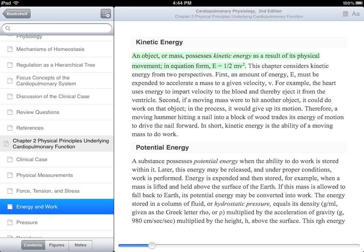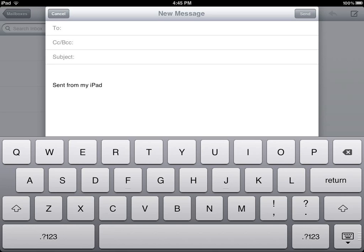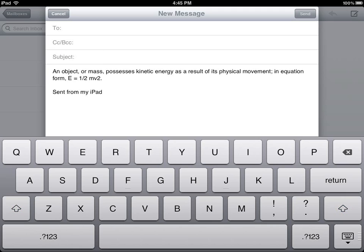To copy an existing highlighted passage, tap anywhere in the highlighted area and choose Copy. To copy non-highlighted text, select the text as if you are going to make a highlight, then tap the Copy button on the pop-up. You can then paste this text into any text editing app or an email.